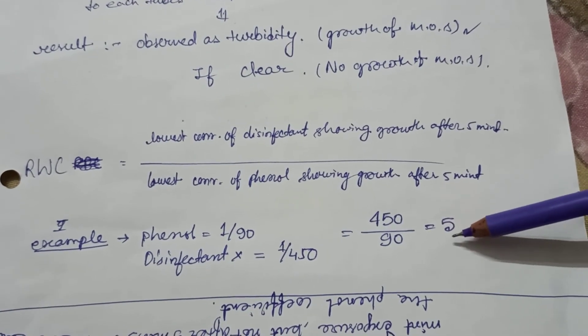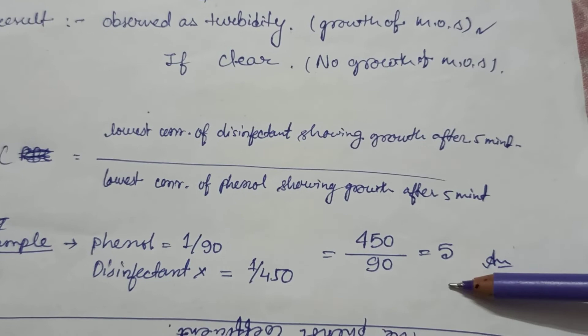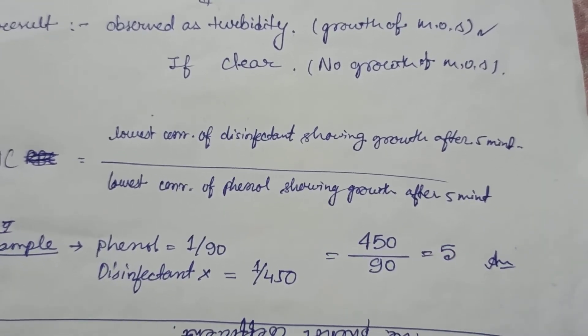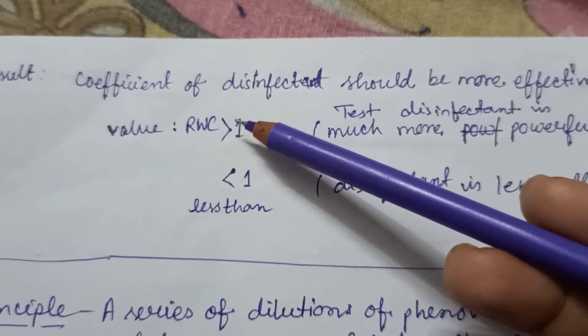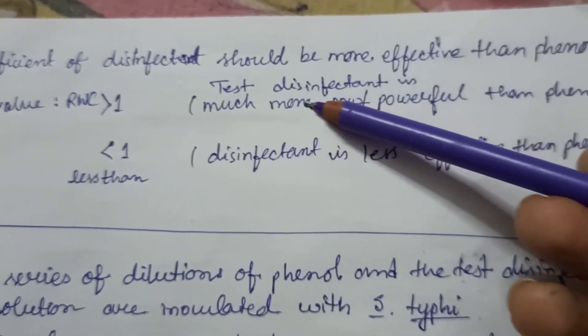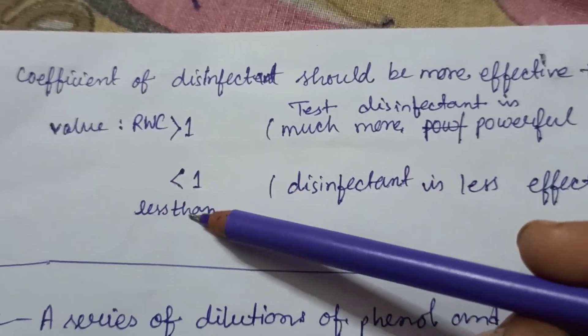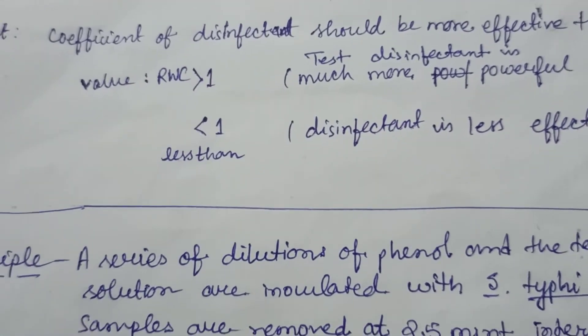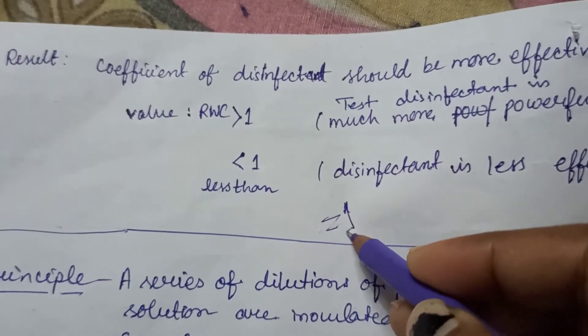This five is greater than one, it means that the test disinfectant solution is more effective and powerful than the phenol. If the value is greater than one, then the test disinfectant is much more powerful than the phenol. If it is less than one, it means the disinfectant is less effective than the phenol. If the value equals one, it means the test disinfectant solution is equal to the phenol.